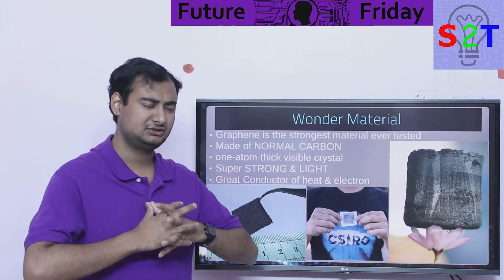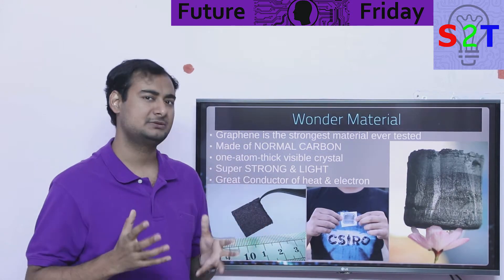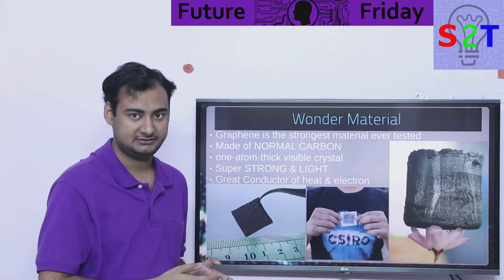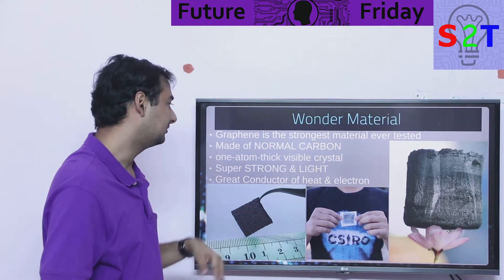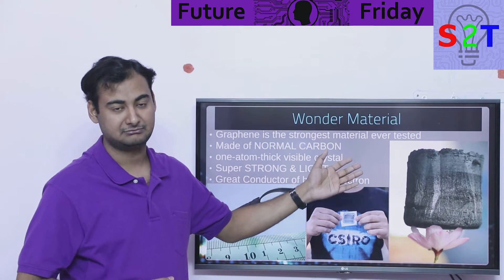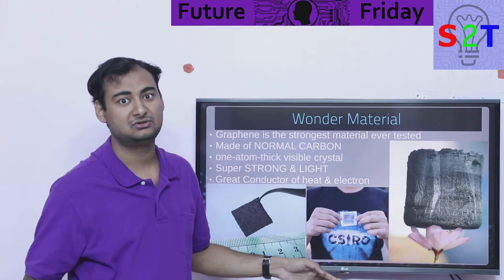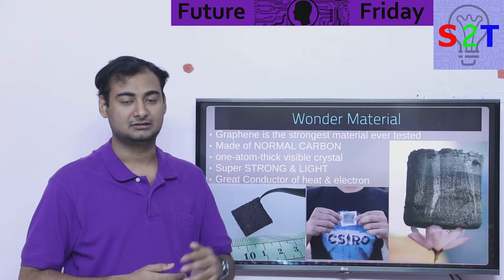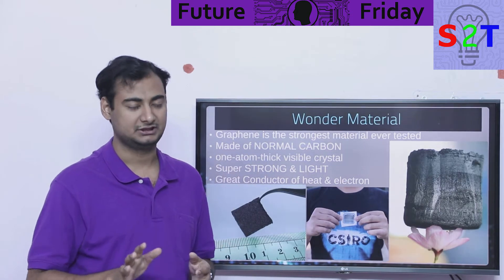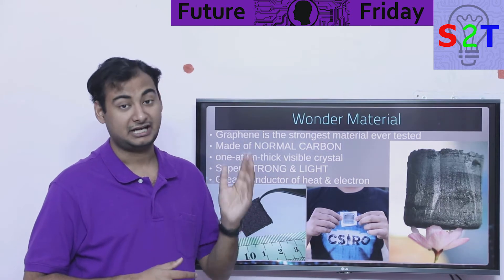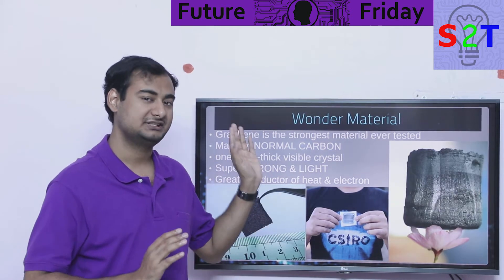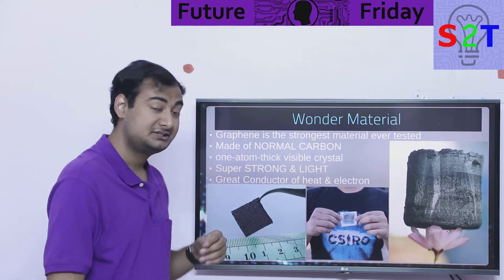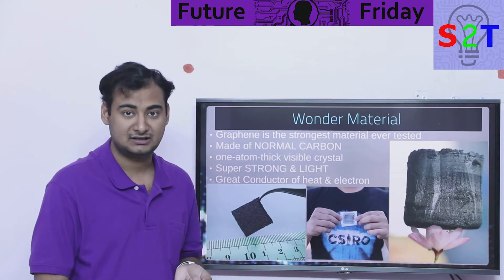If you go online, there is an enormous amount of potential claimed about this — it might as well be a magic material. Graphene is the strongest material ever tested in a lab, and that's absolutely true. Steel? Nothing. Kevlar? Nothing. Titanium? Nothing. Flat out, this is the strongest material we have ever tested in a lab, and it's made out of normal carbon.